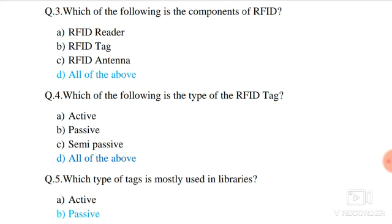Question number 4. Which of the following is the type of RFID tag? Option D is correct — all of the above options are correct.